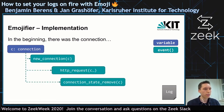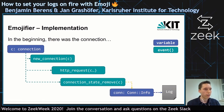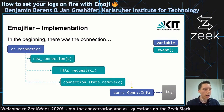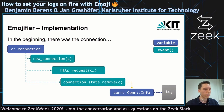In the process of Zeek analyzing the connection, there are different events that get fired: first we have the new connection, then we might have more higher-level events like HTTP requests, and finally the connection state remove event. All those events get a reference to the connection.